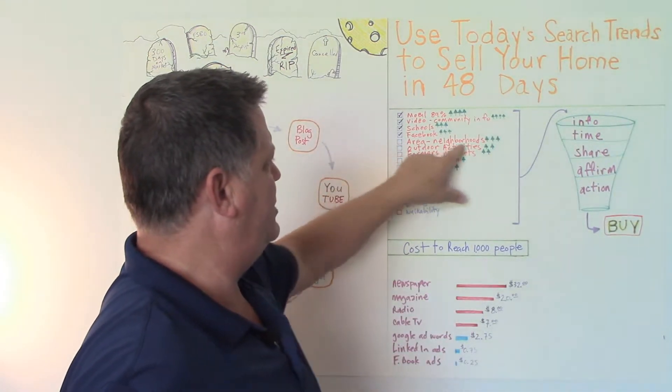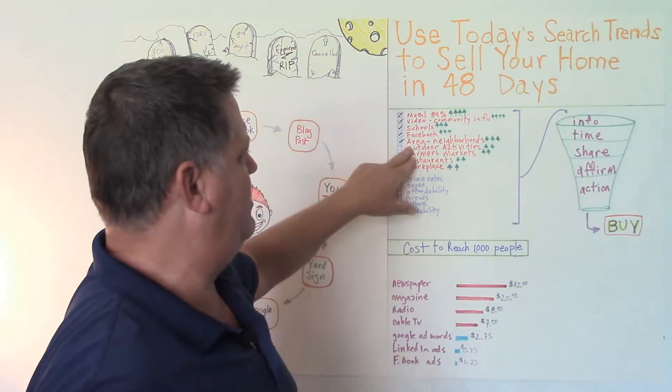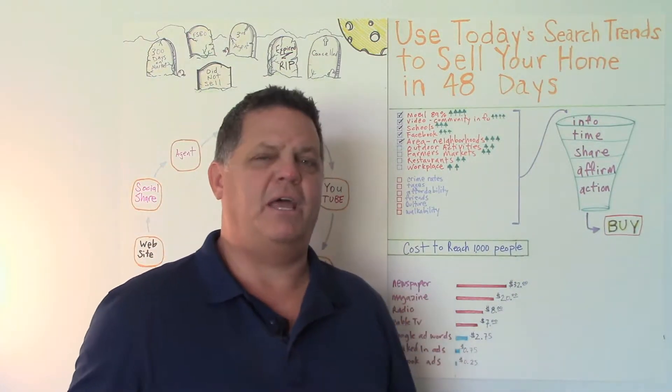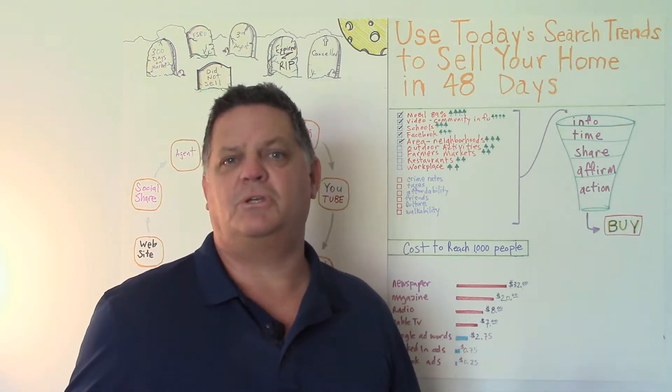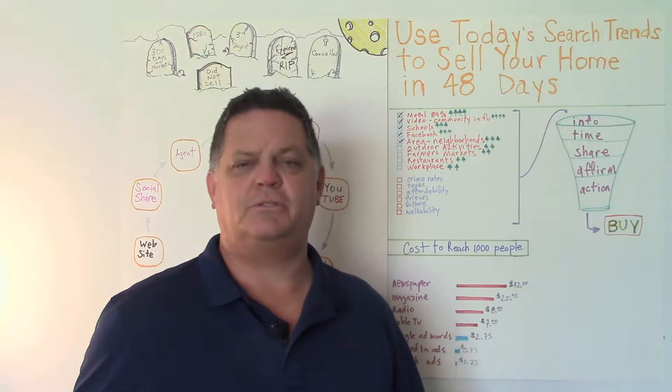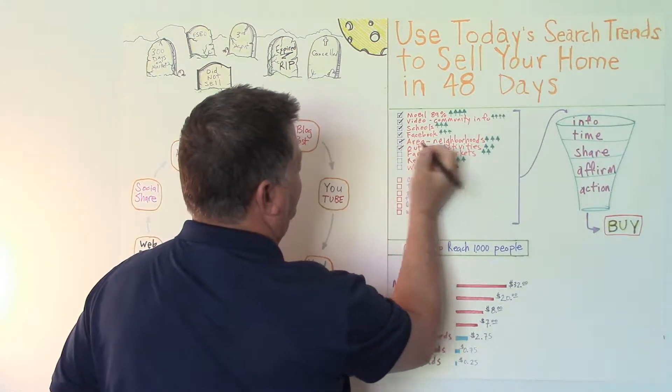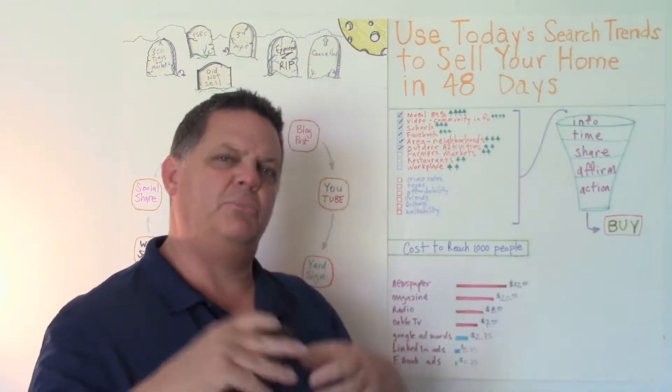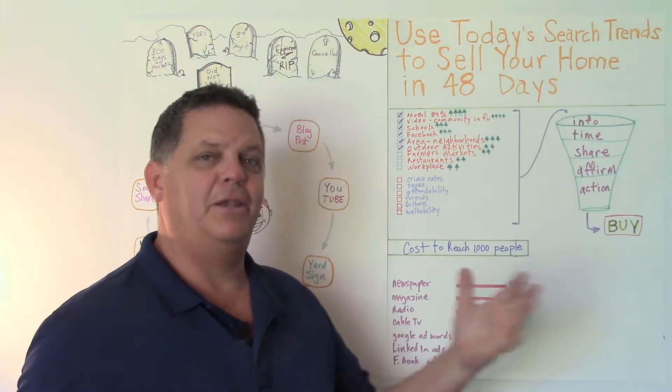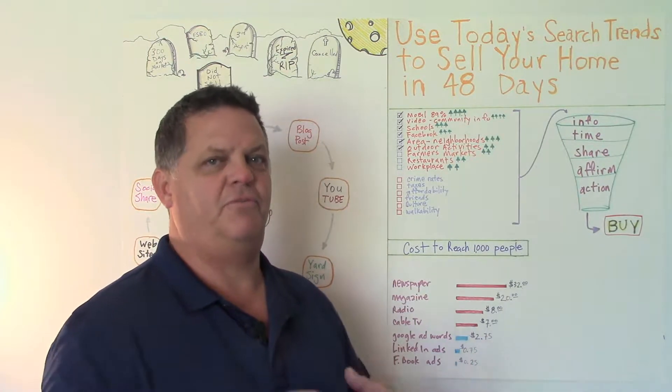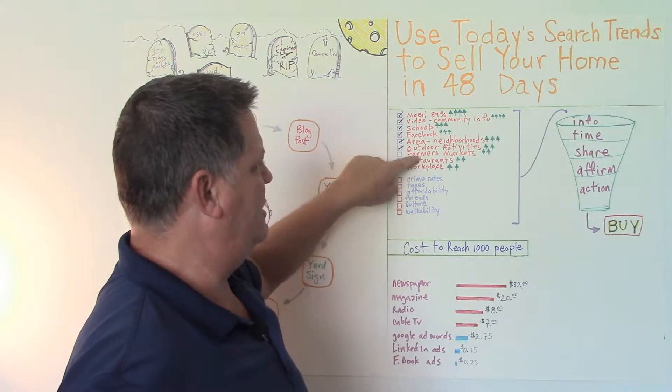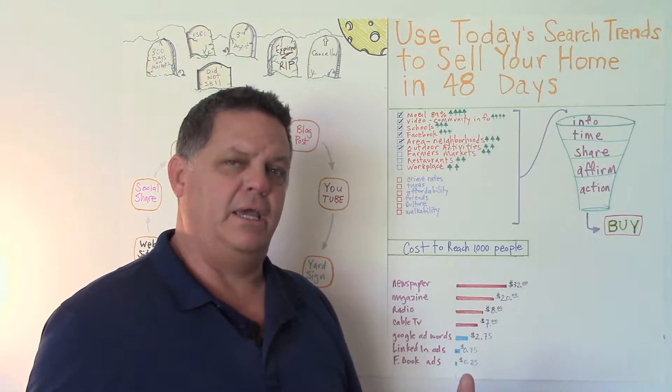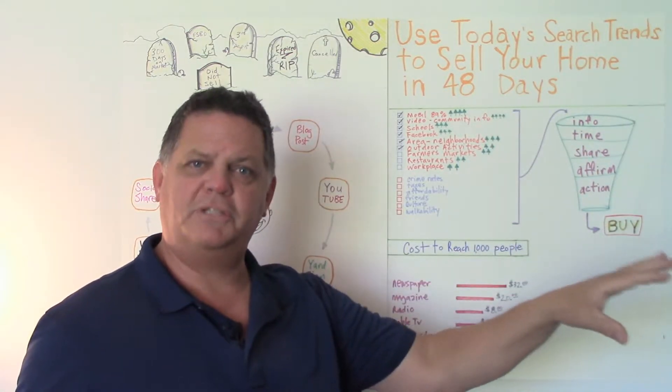Next thing, we already touched on areas and neighborhoods. This is something that's really important to people. Outdoor activities. A lot of people, although they're living in the city, they want to have access to trails and hiking and fitness options that are appealing to them. Maybe running trails and parks, pools in the area. And another thing people are interested in are things like farmer's markets. Anything that creates a sense of community in the area that they live in. Because people really want more than just a house.